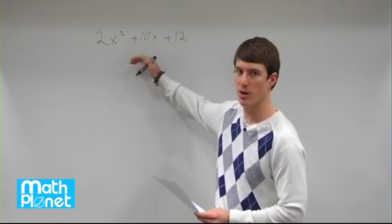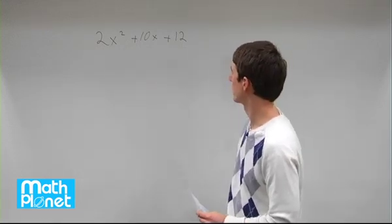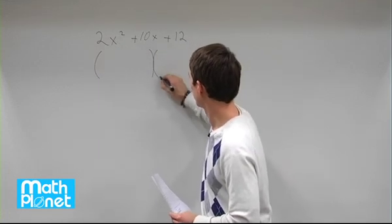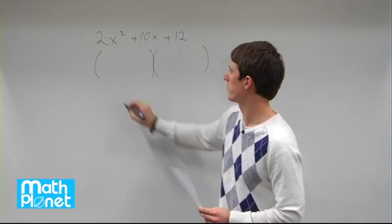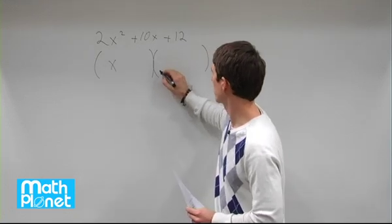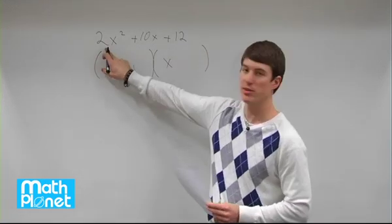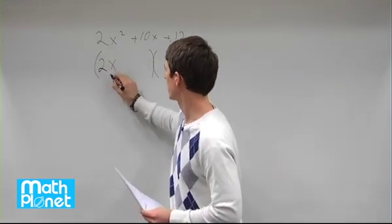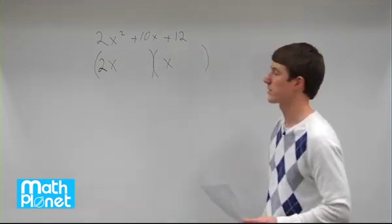then we can try and solve it the straightforward way from here. So the straightforward way would be, again, we still have two quantities multiplied together. Instead of just x plus and minus something, we're going to have to have some number here to get this 2. The only factors of 2, of course, are 2 and 1. So one of them is going to be 2 times x and one will just be 1 times x.